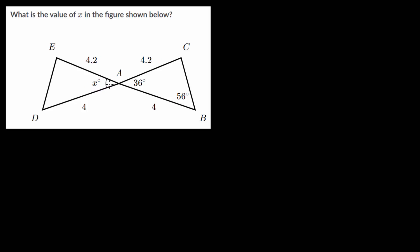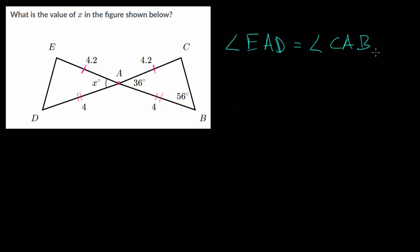We can notice that triangle EAD and triangle CAB share this side length of 4.2, they share this side length of 4, and we also have these two angles that are across from each other. When two straight lines intersect, the angles opposite each other are called vertical angles, and these are equal.